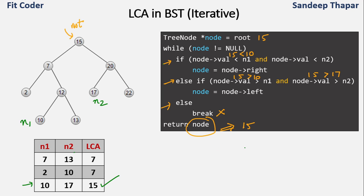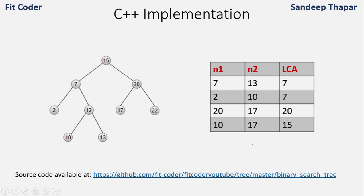The time complexity of both the recursive and iterative methods is O(h), where h is the height of the tree. Now let's have a look at the implementation. All the source code is available in my GitHub repository, with the link in the description.